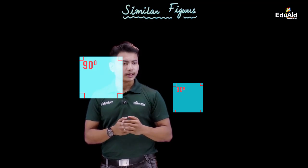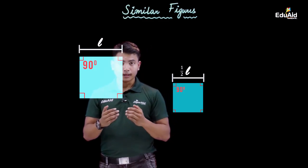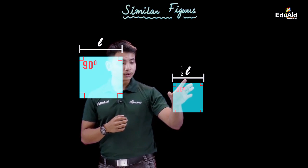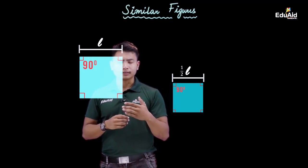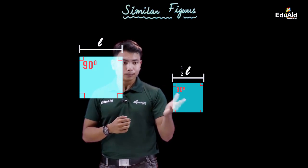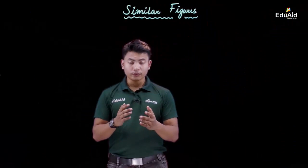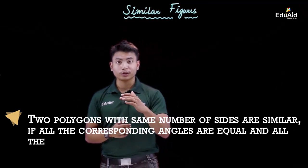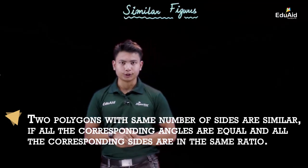Suppose the side of the smaller square is half the length of the side of the larger square. Since all sides of a square are equal, all sides of the smaller square will be half the length of the sides of the larger square. In other words, the ratio of the corresponding sides is equal in both squares, and the same applies to other figures. So we can conclude that two polygons with the same number of sides are similar if all corresponding angles are equal and all corresponding sides are in the same ratio.